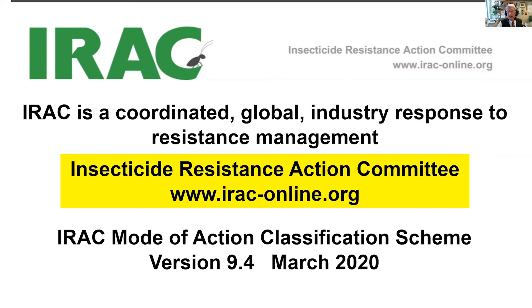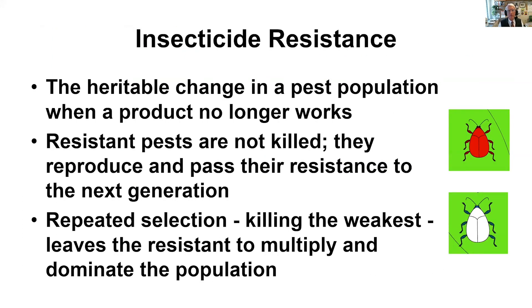In order to talk about resistance management, we have to talk about resistance. Insecticide resistance is an inherited change within the insect body — an insect has inherited something from its parents that allows it to withstand or be immune or be resistant to the labeled amount of insecticide that you're applying. Those insects that have that inherited characteristic are no longer killed by the insecticide, meaning they are able to reproduce and pass on their resistant genes to the next generation. So by repeatedly applying that insecticide, you are selecting and killing the weakest individuals in the population, leaving the resistant individuals to multiply and dominate the population.